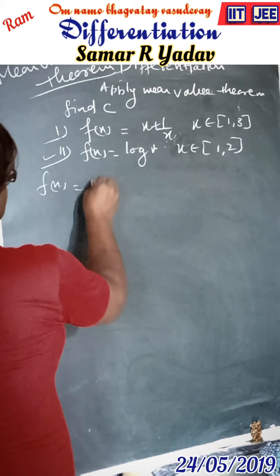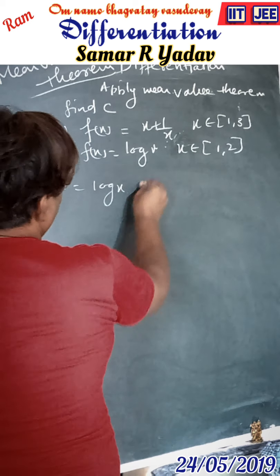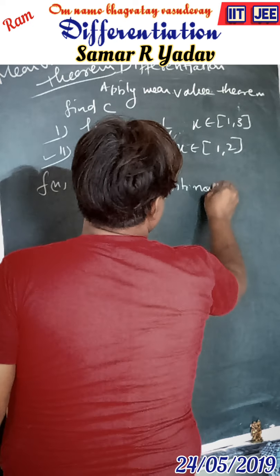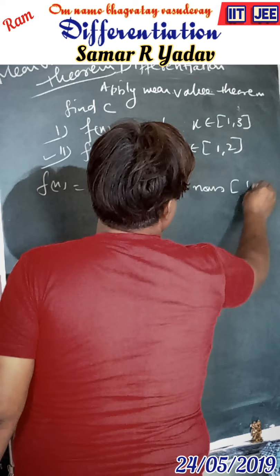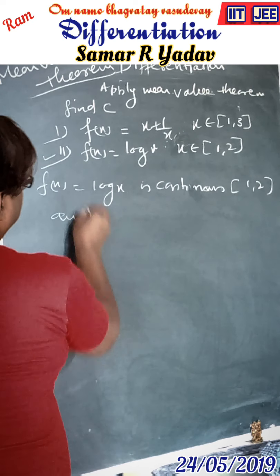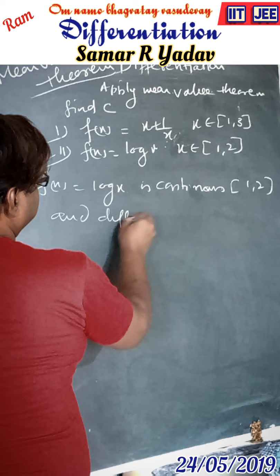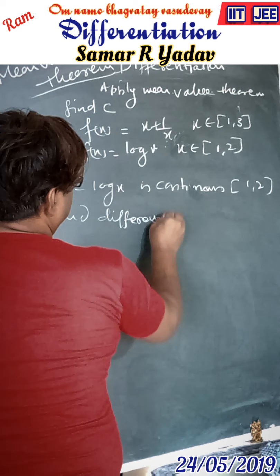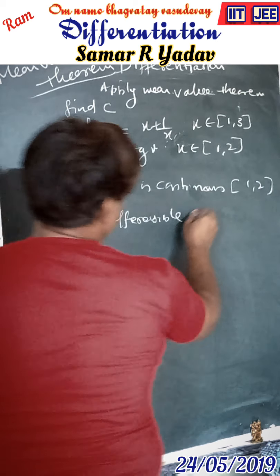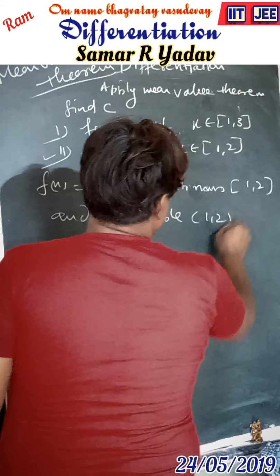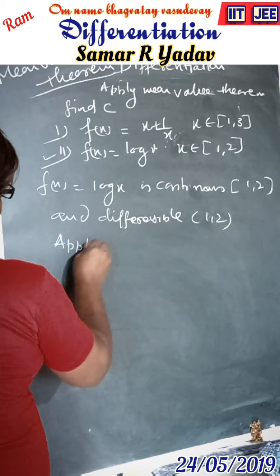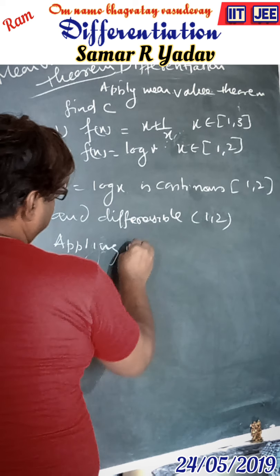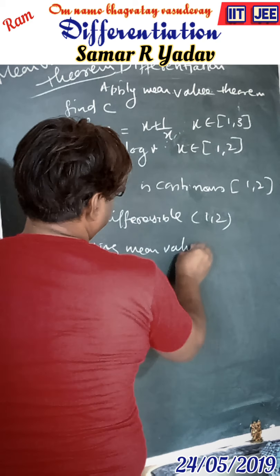For f(x) = log x, the function is continuous on [1, 2] and differentiable on the interval. So we can apply the Mean-Value Theorem.